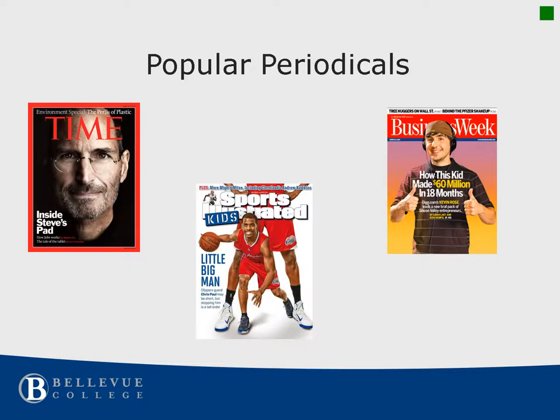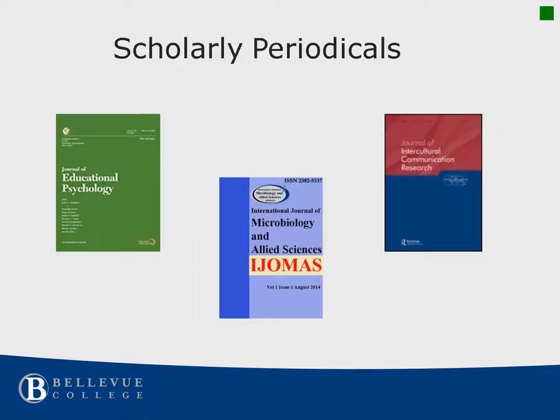A popular periodical seeks the readership of the general public and is usually intended for entertainment. The content in popular articles is written for a general audience. Think of a scholarly periodical as a professional conversation. It is intended for a specific reading audience. The content in scholarly articles often contains original research and is written in language used in a particular field or discipline.